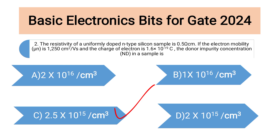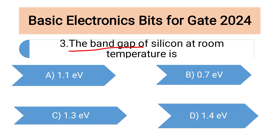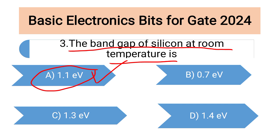Please do this problem using that formula and verify your answer. Now coming to the third question: the band gap of silicon at room temperature is? We know for every atom there is a band gap, and based on band gap we can conclude whether the material acts as a conductor, semiconductor, or insulator. For silicon at room temperature, remember this constant value: 1.1 electron volts is the band gap. So the correct answer is option A.